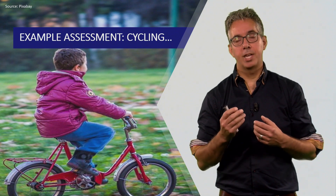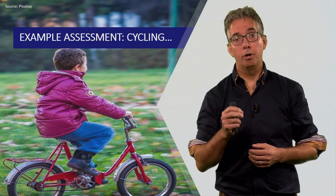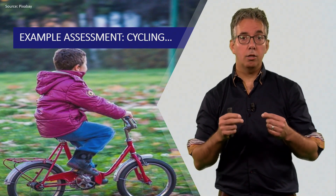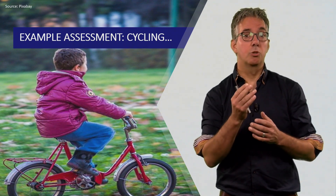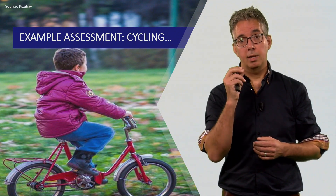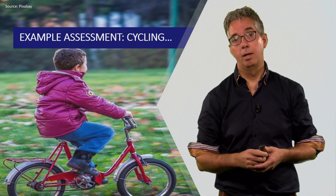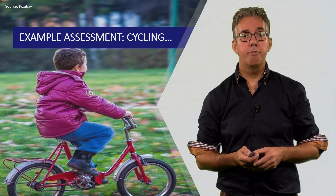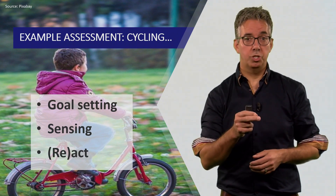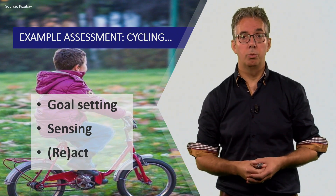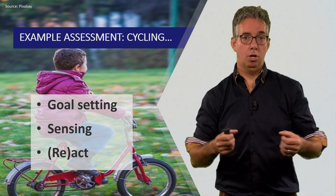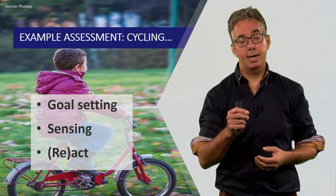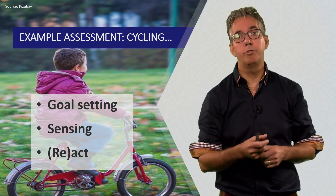Let's introduce the case of cycling. Children learn to cycle at a very young age in the Netherlands, and learning how to cycle comes with continuous assessments. Assessing things in this context is built up of three different processes: goal setting — where is it that you want to go; sensing — are you steering in the right direction, are you still in balance; and acting — acting upon what you sense in order to achieve your goals.